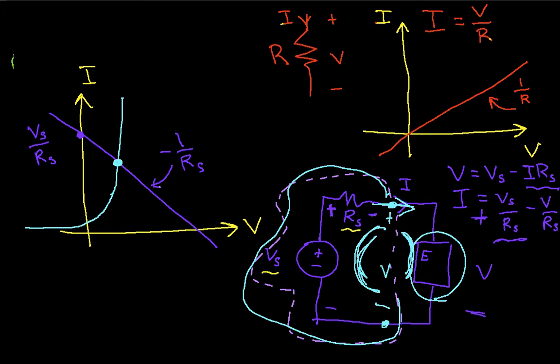Where these two lines intersect, that's the voltage across the element and the current through the element. It turns out this is a nice graphical way to solve these sorts of problems. If the element were a resistor, its VI curve would be a straight line with slope 1 over R, and the intersection of the two lines would give you the voltage and current. So you can actually solve linear circuits graphically too, though you typically don't.